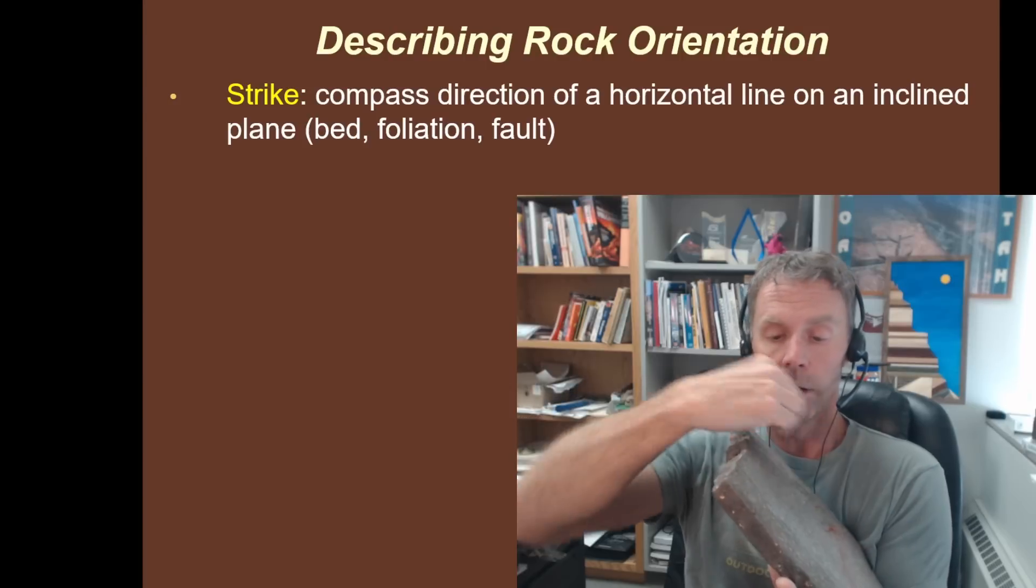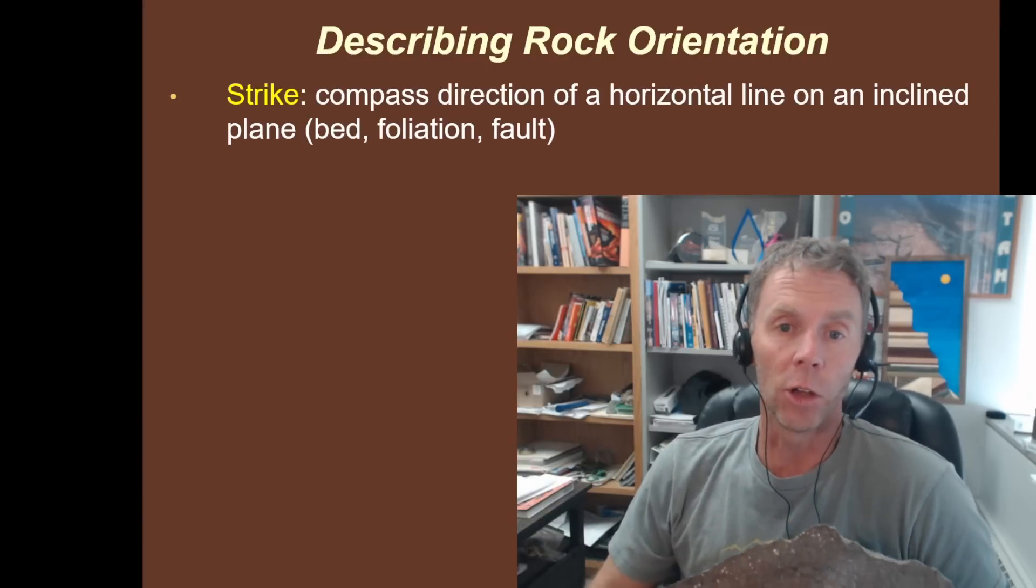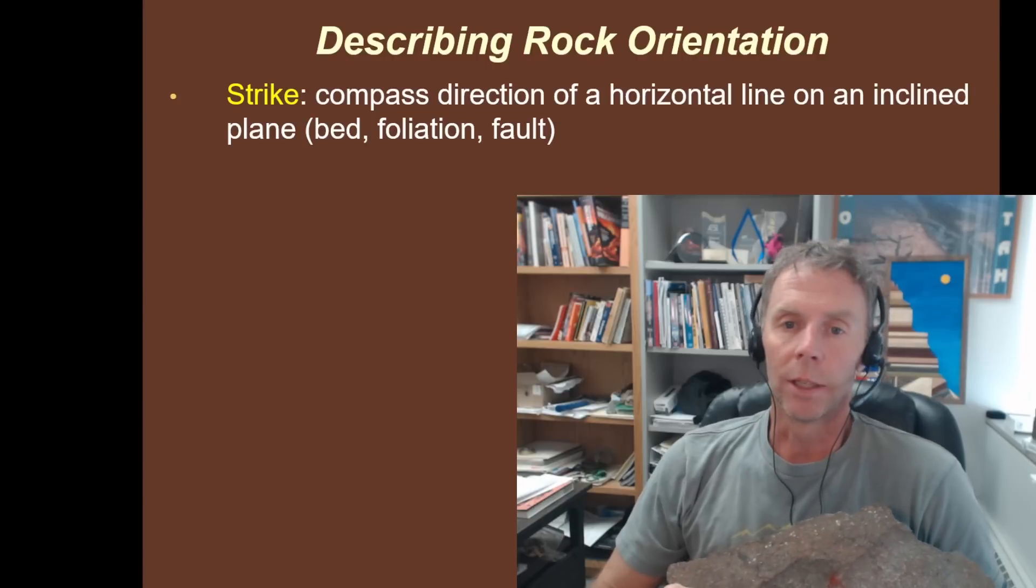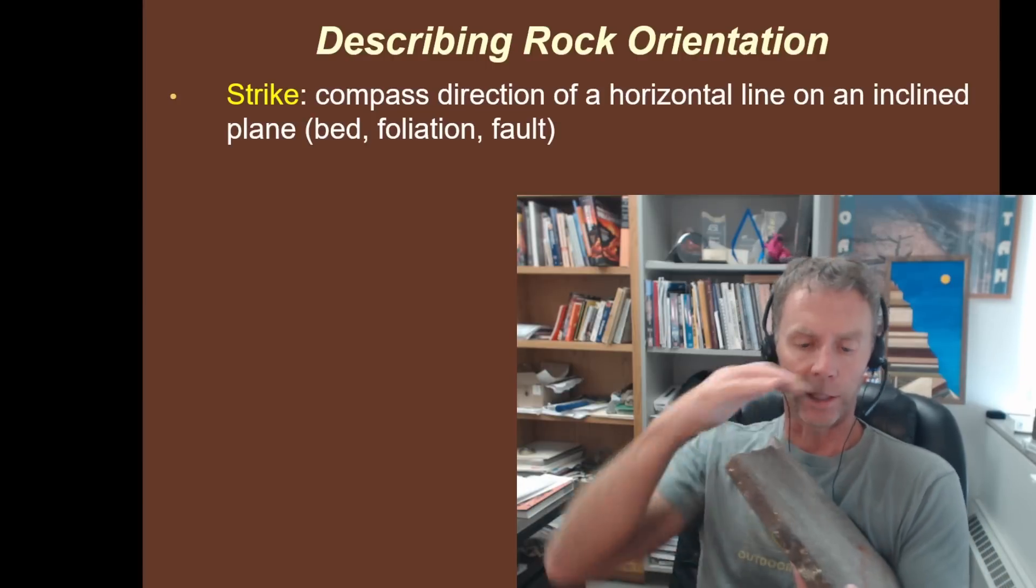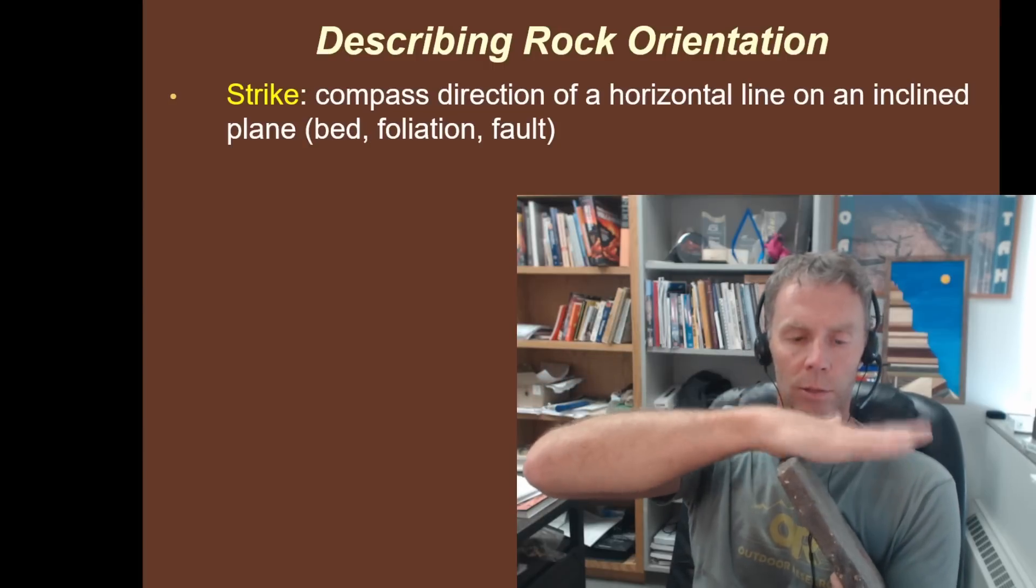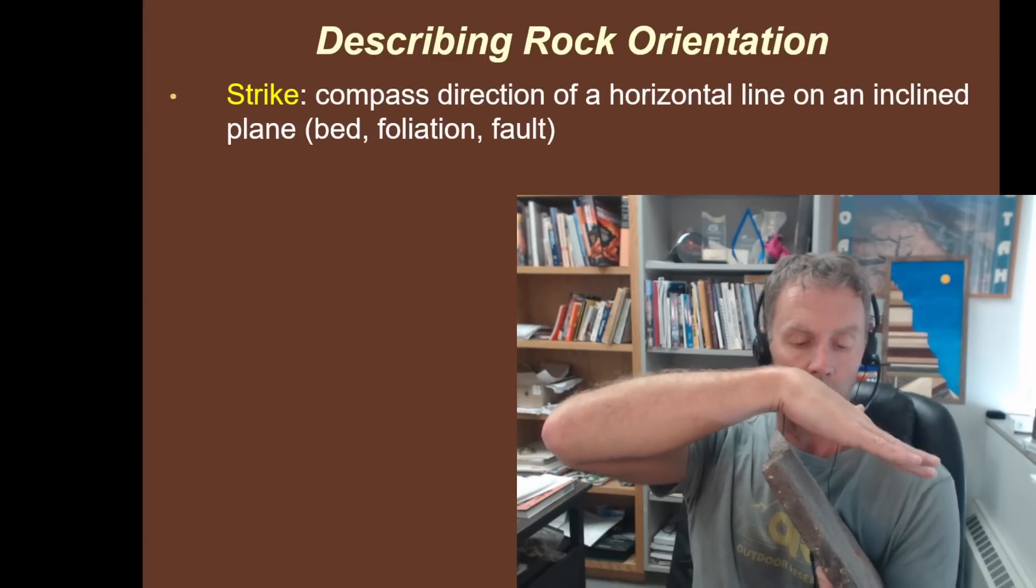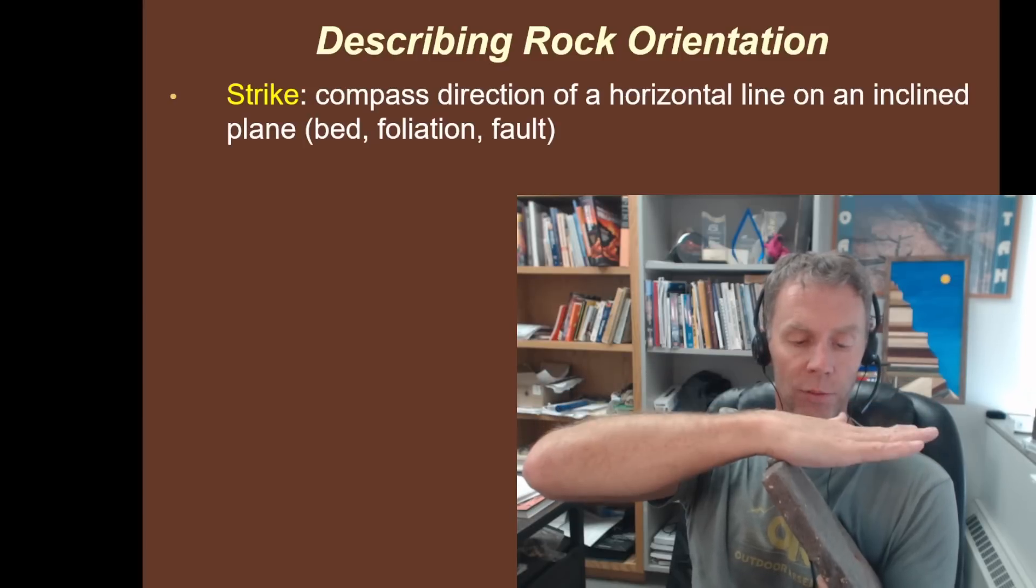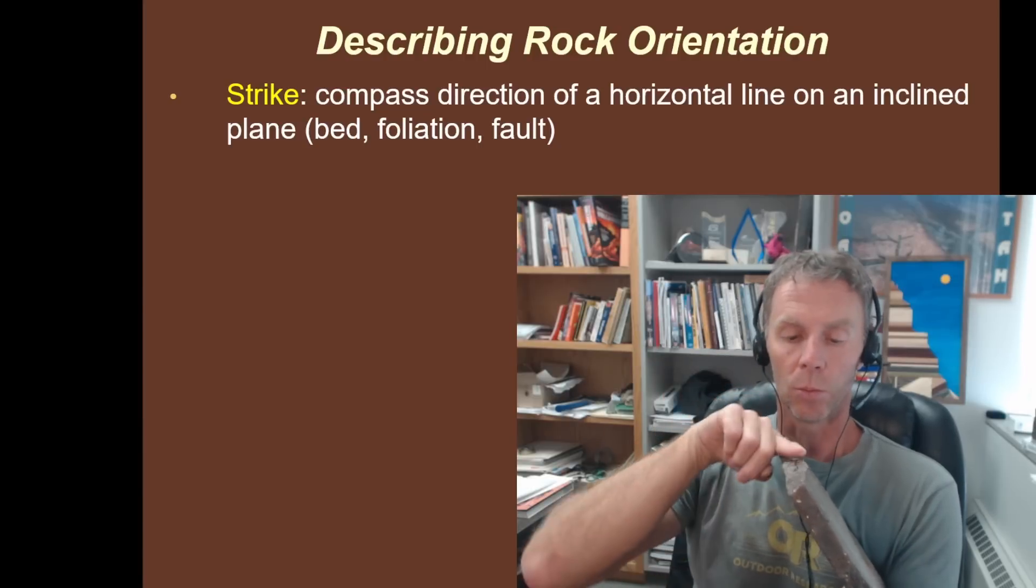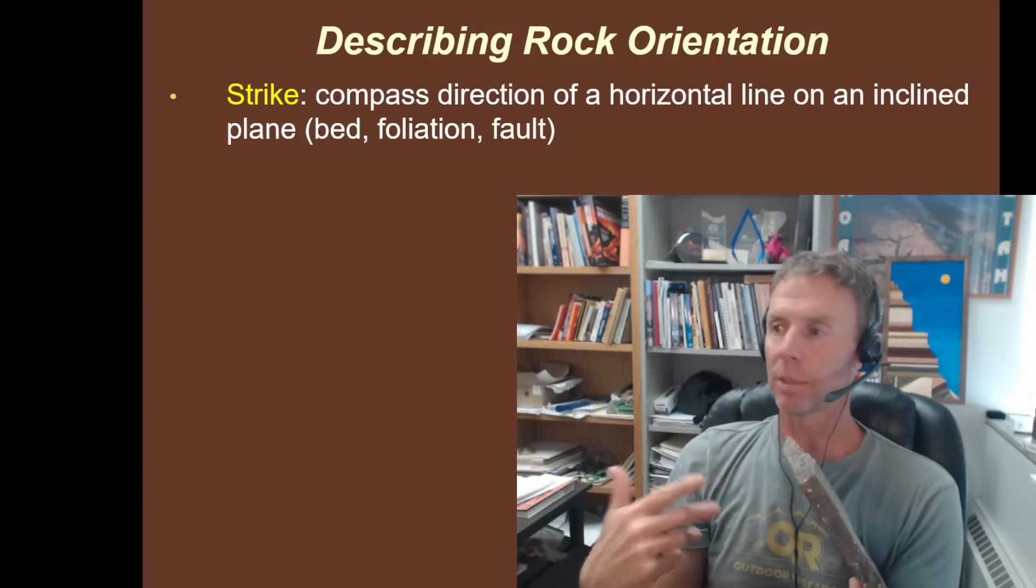When two planes intersect, not only do you get an angle, but you get a line. You know how sometimes people refer to faults as the fault line? Like, oh, the San Andreas fault line runs right through this shopping mall. Well, what they really mean is that the fault itself is a planar surface. It's intersecting the ground, which is another horizontal planar surface.